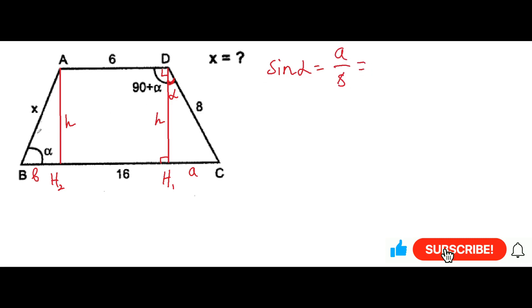And it will be also equal to, from the triangle h2b, h over x. And sine alpha at the same time will be equal to h over 8 from this triangle, and from this triangle it will be equal to b over x.